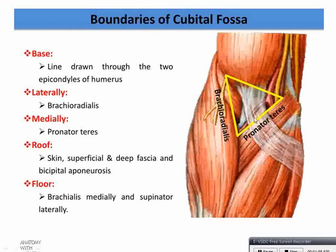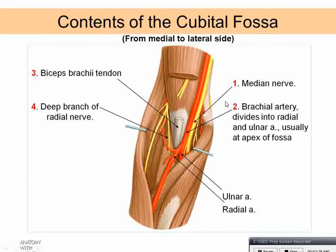The roof is formed by the skin, superficial fascia, deep fascia, and bicipital aponeurosis which is a part of the biceps muscle. The floor is made of two muscles: brachialis medially, which lies deep to biceps brachii, and supinator laterally.